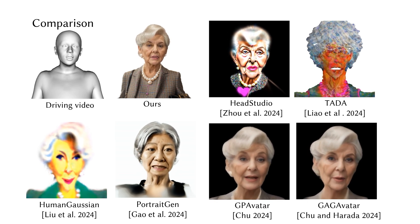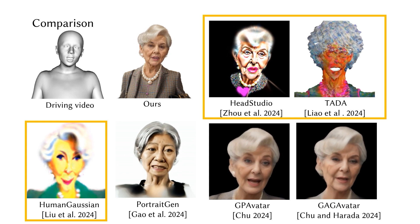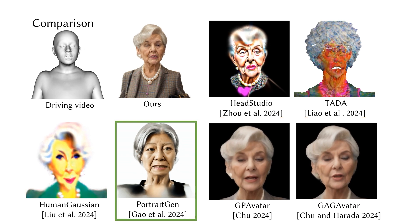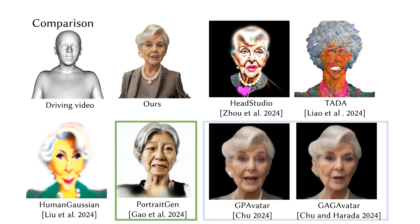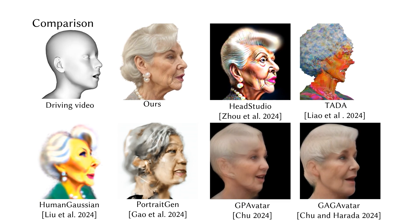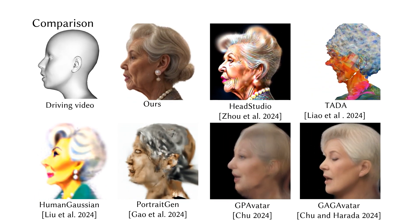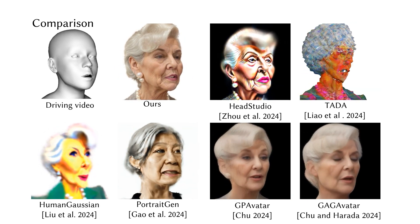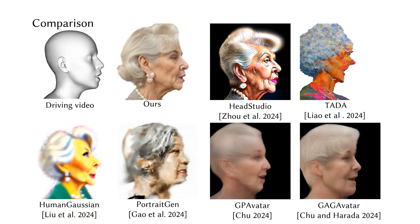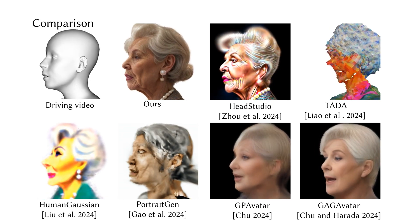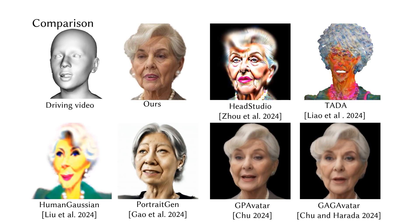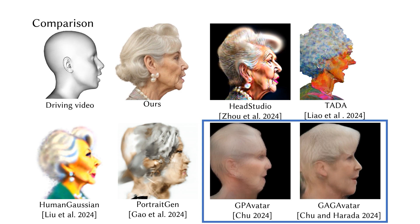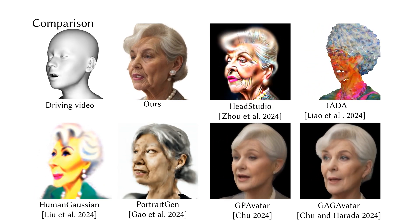We evaluate our method against SOTA approaches for animatable 3D avatar generation, including HeadStudio, TADA, Human Gaussian, and the avatar editing approach PortraitGen. We also compare with 3DGS-based head reconstruction models such as GP Avatar and Gag Avatar. HeadStudio struggles to fully eliminate misalignment despite using landmarks for expression alignment. Human Gaussian and PortraitGen face significant challenges aligning with driving parametric models. HeadStudio, TADA, and Human Gaussian often generate unrealistic appearances, while GP Avatar and Gag Avatar produce blurry outputs, especially in hair and teeth regions. In contrast, our method achieves superior results in challenging areas, significantly improving both alignment and controllability.